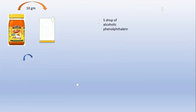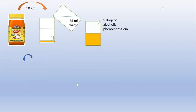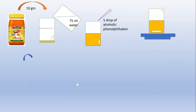Just 10 grams of honey should be transferred, and to that we are going to add near about 75 ml of water. Then to that one we are going to add five drops of alcoholic phenolphthalein solution. Once the five drops of phenolphthalein are added, we have to place this on a magnetic stirrer, and stirring should be carried out to have uniform mixing of the honey, water, and phenolphthalein.